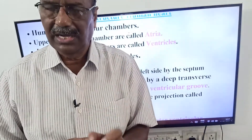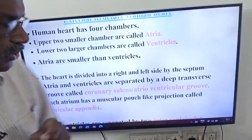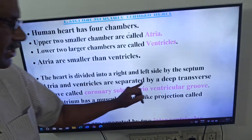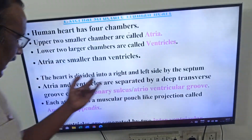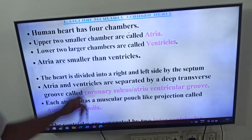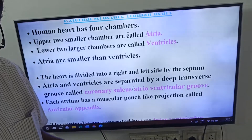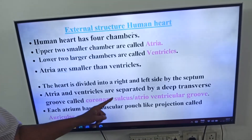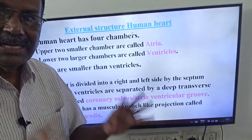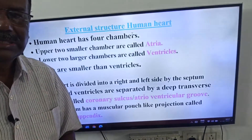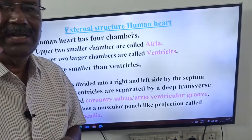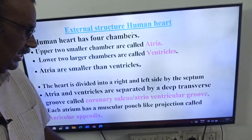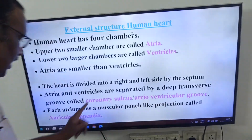Coronary sulcus is also called the atrioventricular groove. Externally, the atria and ventricles are separated by a deep transverse groove — that is called the coronary sulcus — and its other name is the atrioventricular groove.